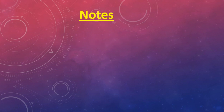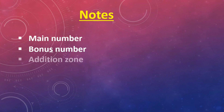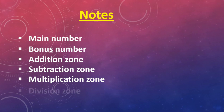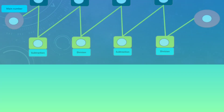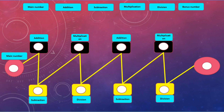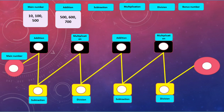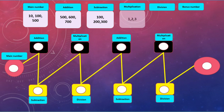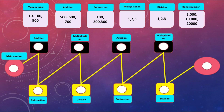Welcome to the topic of Connect the Numbers. There are some important notes for playing the game: main number, bonus number, addition zone, subtraction zone, multiplication zone, and division zone. Example one: the main number bowl has three numbers — 10, 100, and 500. The addition bowl has the numbers 500, 600, and 700. The subtraction bowl has the numbers 100, 200, and 300. The multiplication bowl has the numbers 1, 2, and 3. The division bowl has 1, 2, and 3. The bonus number bowl has 5,000, 10,000, and 20,000.